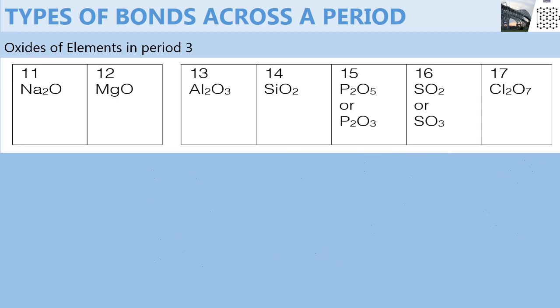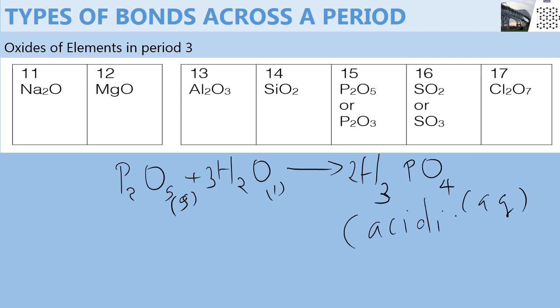Another example: phosphorus pentoxide reacts with water to form phosphoric acid. In order to balance this equation, we need to put 3 here and 2 here, so that we have 2 phosphorus atoms on the reactant side balancing with 2 on the product side, and all the other elements will balance. This one is also acidic. All the others will react in similar ways to form acidic solutions.